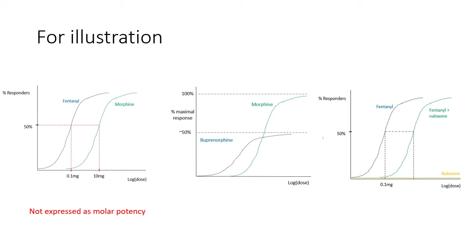Regarding intrinsic activity, I think of this as a phenomenon pertaining to the individual drug molecule and its receptor, rather than a global response represented on a dose-response curve. Intrinsic activity is defined as a measure of the maximum level of response a drug can produce, expressed in relation to full agonist activity. A full agonist has an intrinsic activity of 1. A competitive antagonist has an intrinsic activity of 0, meaning it does nothing but get in the way of the endogenous agonist. A partial agonist has an intrinsic activity between 0 and +1, and an inverse agonist has an intrinsic activity between 0 and -1.